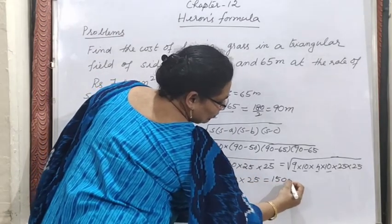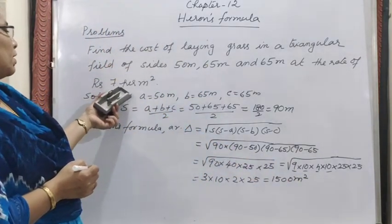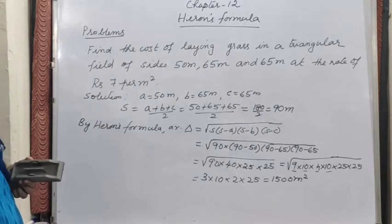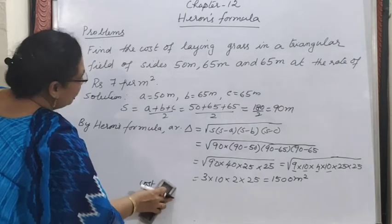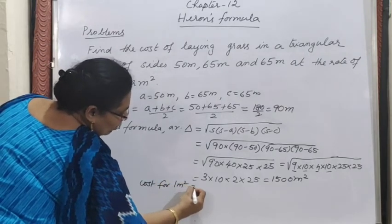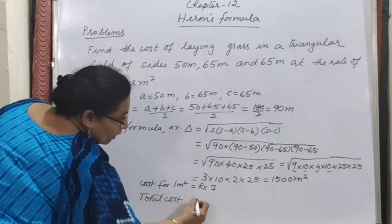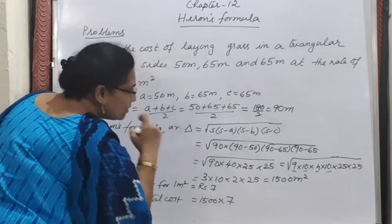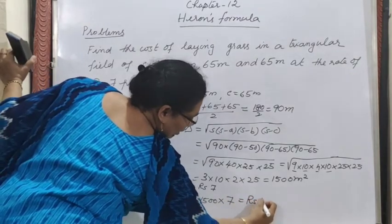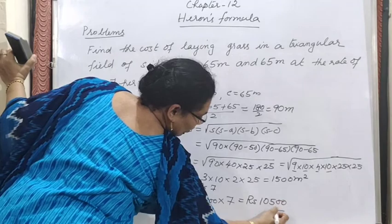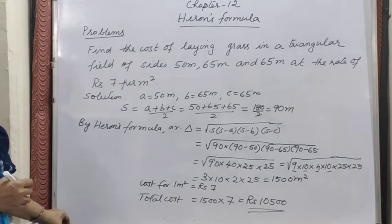We have the area = 1500 m². The question asks for the cost of laying grass at ₹7 per meter square. Cost for 1 m² = ₹7, so total cost = 1500 × 7 = ₹10,500. That is the answer.